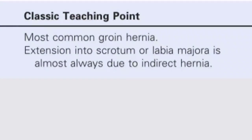The most important classical teaching point for indirect inguinal hernias: these are the most common groin hernias. Extension into the scrotum or labia majora in females is almost always due to indirect hernia. When you see the scrotum filled with intestinal contents or omentum in males, or in females the labia majora protruding outward and filled with omental fat — that would be indirect inguinal hernia, and should always be labeled as such.